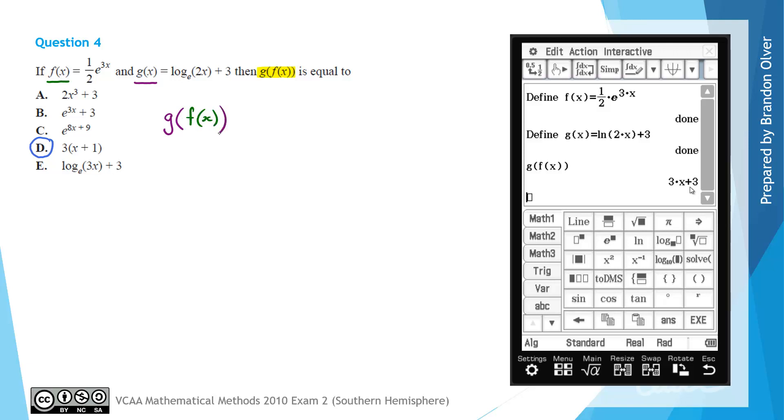And g of f of x would be g bracket. And wherever there is an x, we're going to replace it with f of x. So this is going to equal, and we're going to have g, which is log e of 2x.